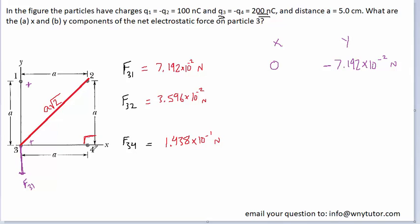For F3,4: particle 4 is negatively charged, so opposite signs produce an attractive force, meaning particle 3 is pulled to the right toward particle 4. That force, labeled F3,4, points exclusively in the positive x direction, giving a y component of 0 and a positive x component of 1.438 times 10 to the minus 1 Newtons.